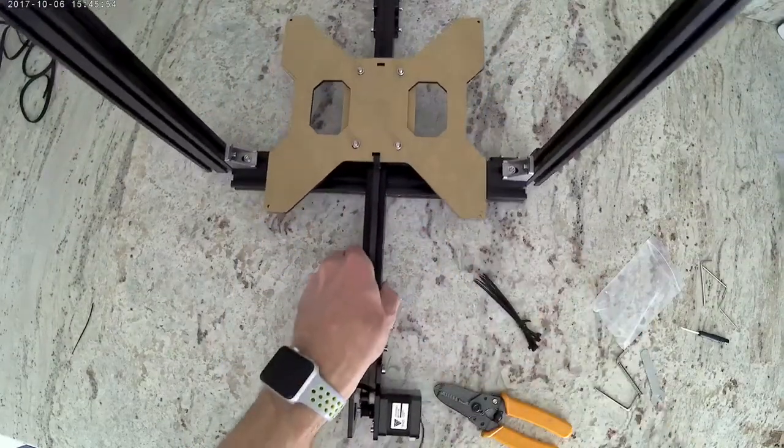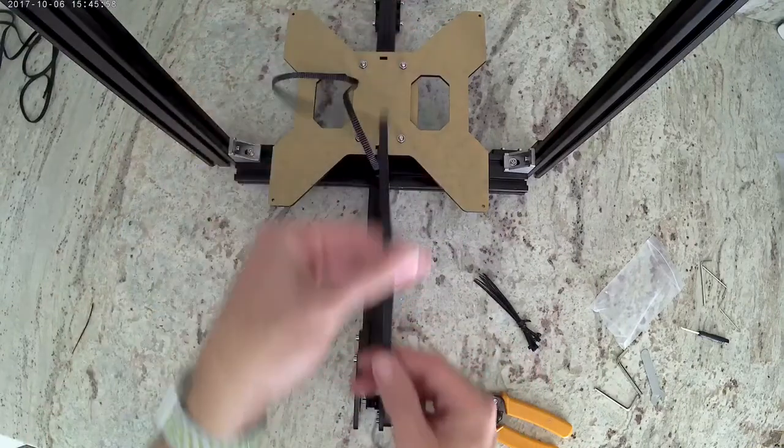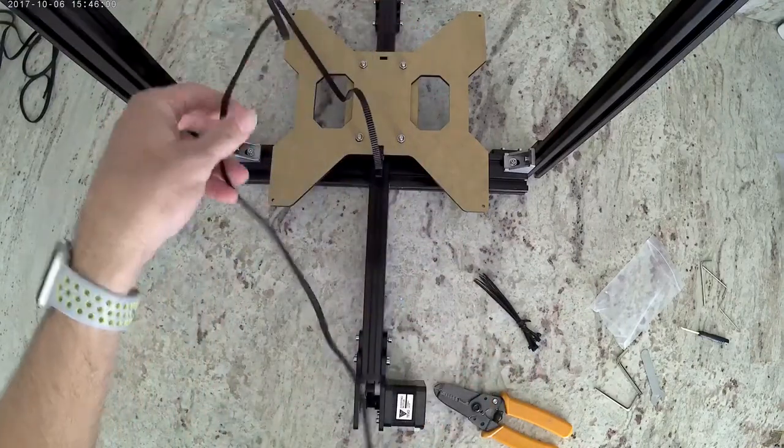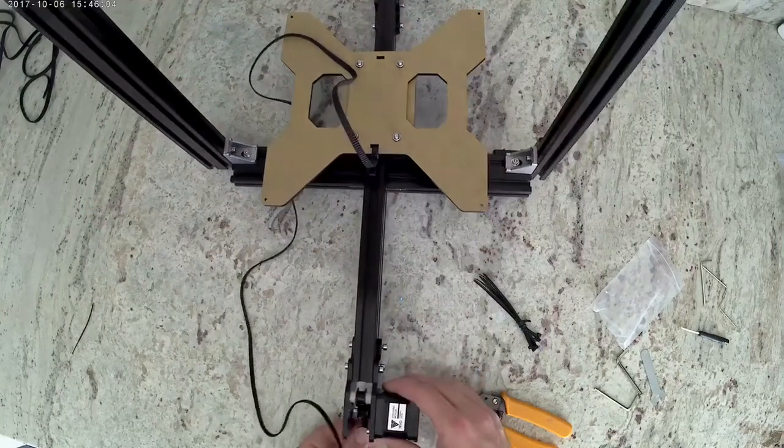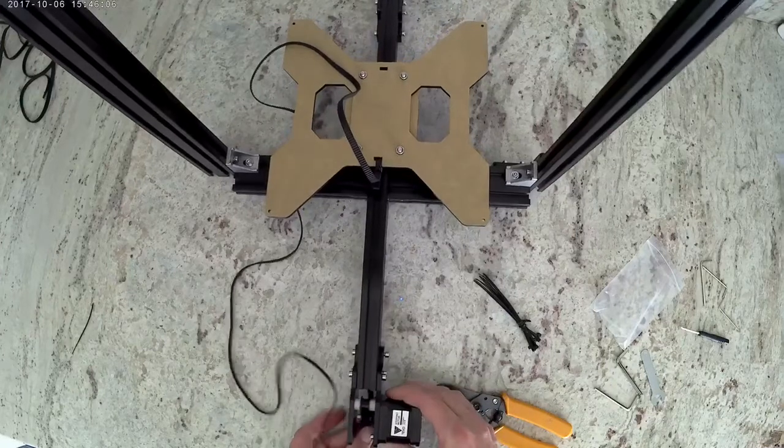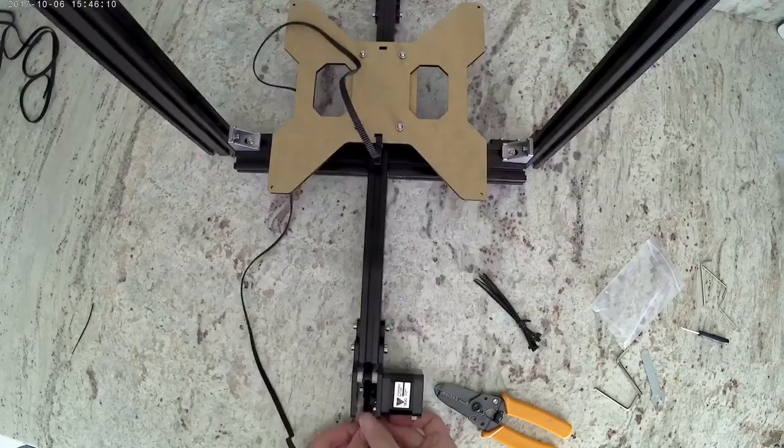We're going to now bring the belt to the back of the machine. We're going to loop it over the little idlers and then around the gear on the motor. Then we're going to put it through the center of the extrusion and have it go all the way through and come out the front of the machine.